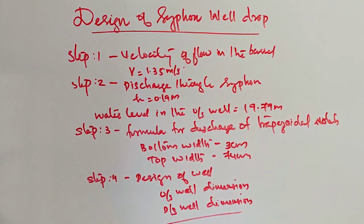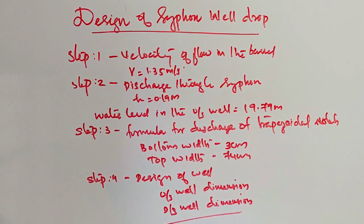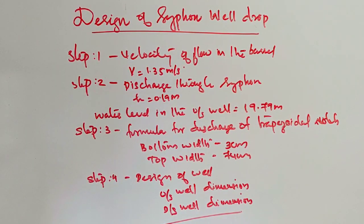We covered the trapezoidal notch with bottom width of 3 centimeters and top width of 74 centimeters. Then step four: design of well, including upstream well dimensions and downstream well dimensions. Next is step five.